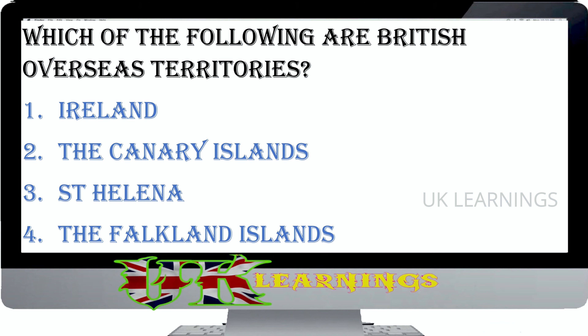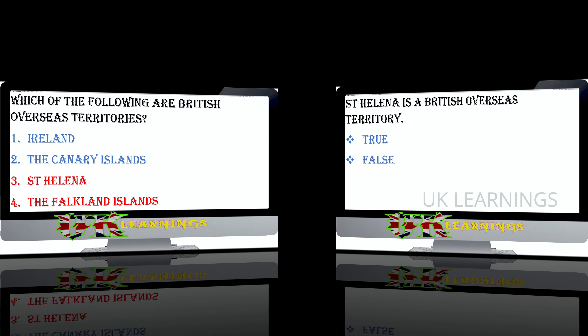Which of the following are British Overseas Territories? The Canary Islands, St Helena, the Falkland Islands. The correct answers are St Helena and the Falkland Islands. There are several British Overseas Territories in other parts of the world, such as St Helena and the Falkland Islands. They are also linked to the UK but are not part of it.